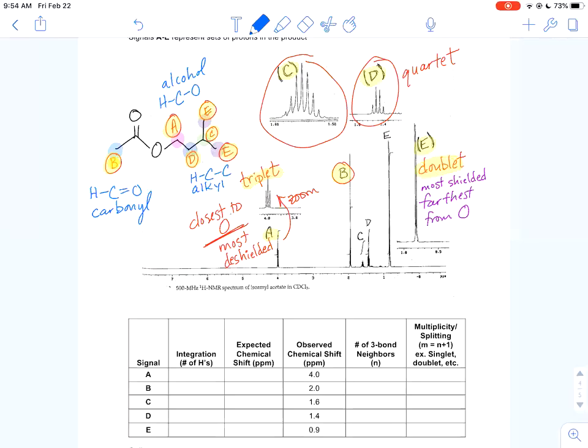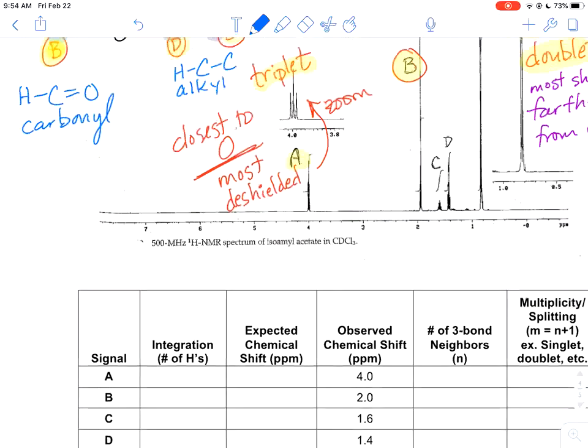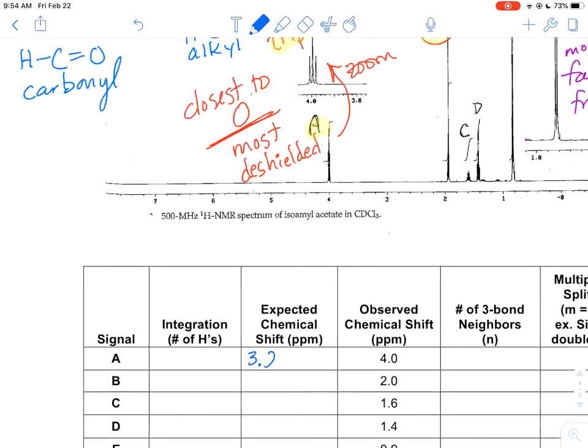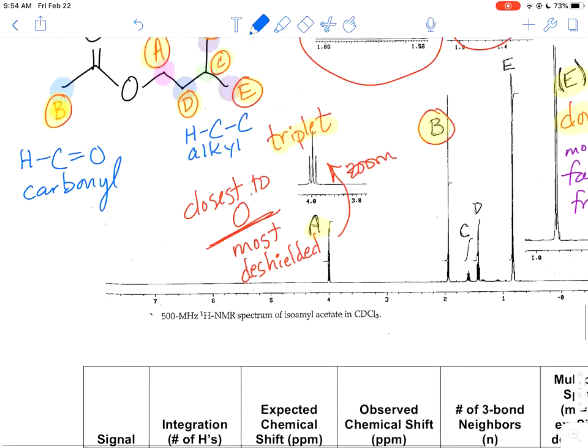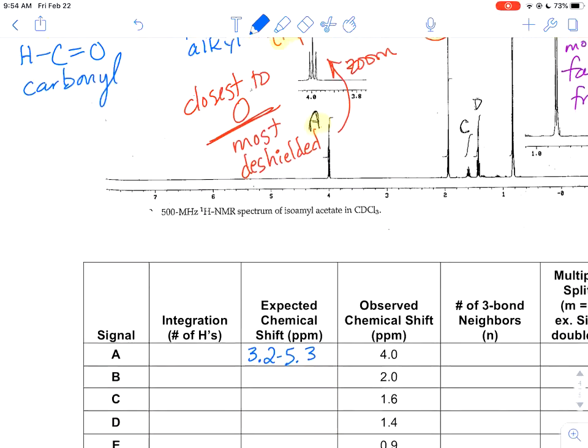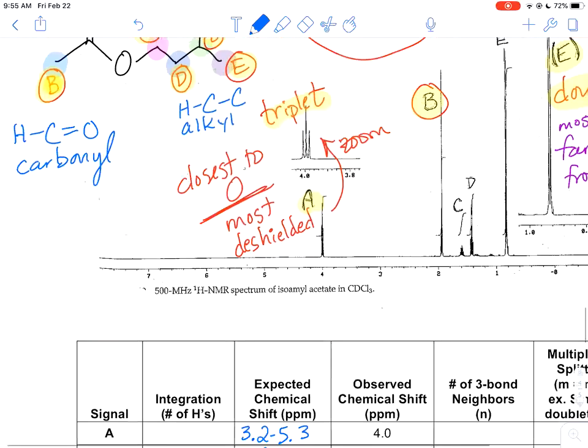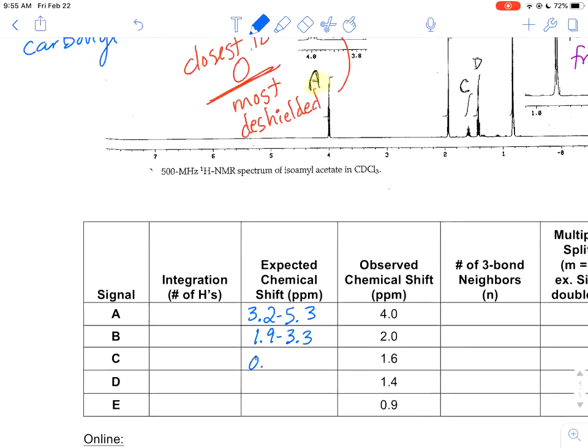So let's put those values in for A, again, it's, I think it's 3.2 to 5.3 if I'm remembering correctly. If we're in the carbonyl range, I want to say it was 1.9 to 3.3. I'll double check those in a second. And then the alkyl range for C, D and E, the remaining protons was 0.8. Actually, I think it's 0.9 to 1.8. I'll double check those. I'll pause it real quick, but yeah, so that's all you need for the expected chemical shift.